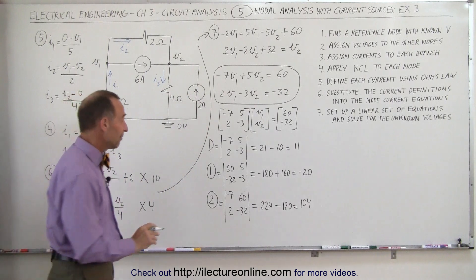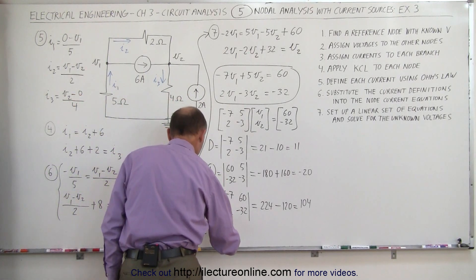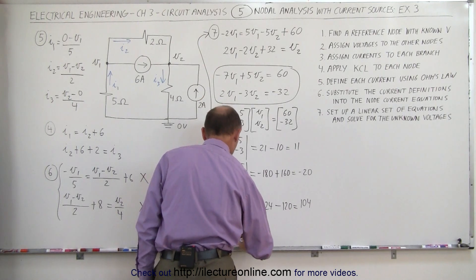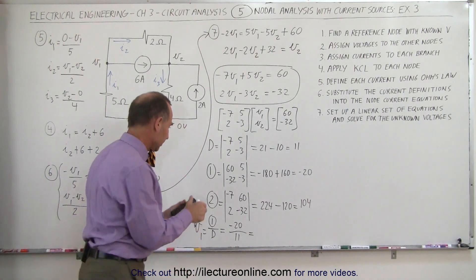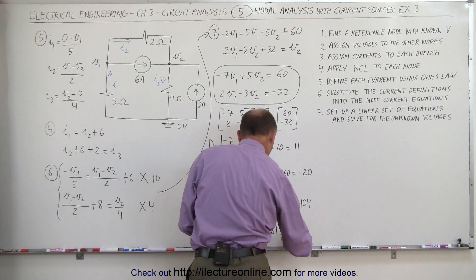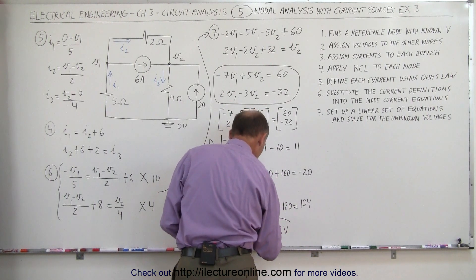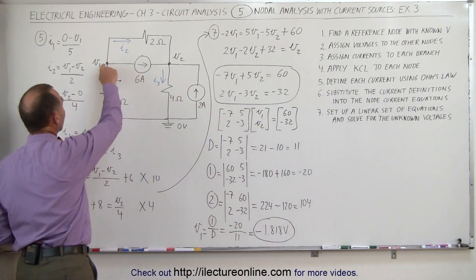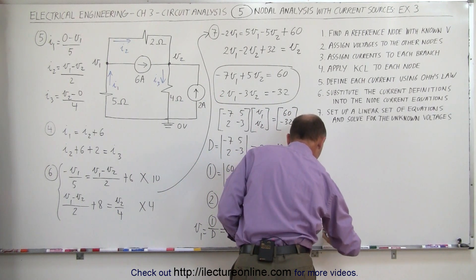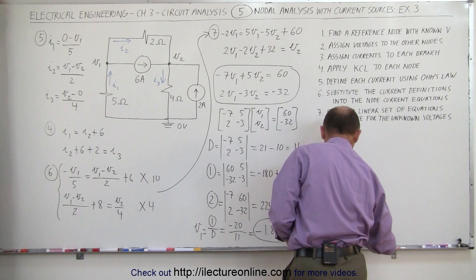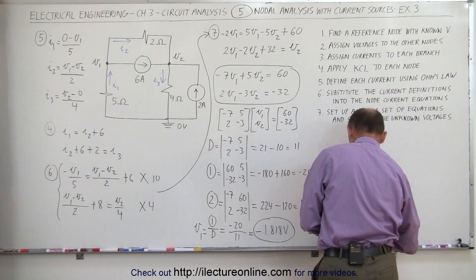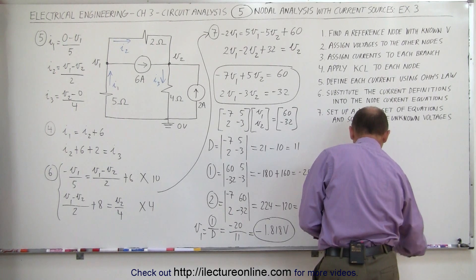V1 can be found by dividing its matrix value by the determinant: minus twenty divided by positive eleven, giving a voltage at V1 equal to minus one point eight one eight volts. As suspected, V1 is lower than zero to have current flowing in this direction. V2 is found by taking one hundred and four divided by eleven, which equals nine point four five five volts — the voltage at this location right here.